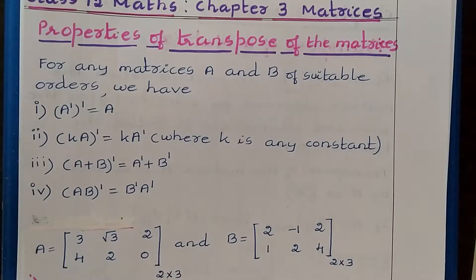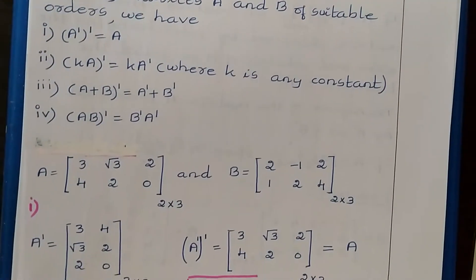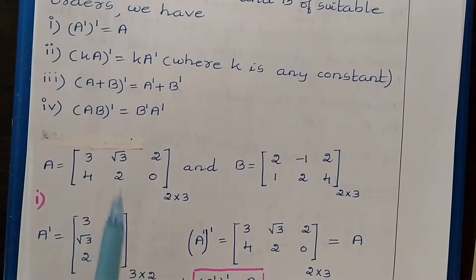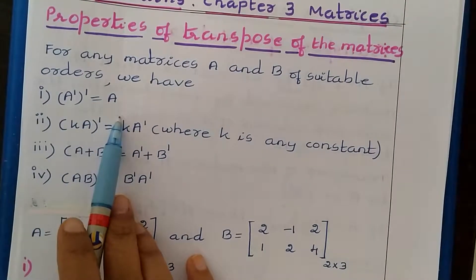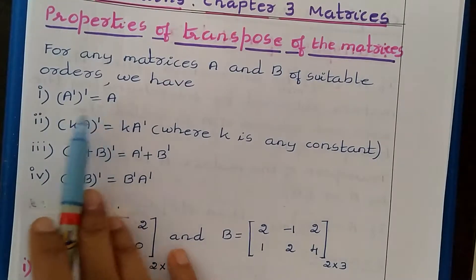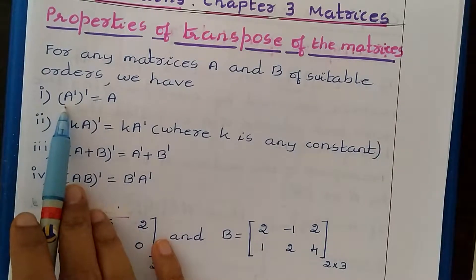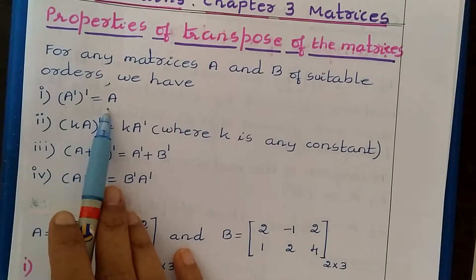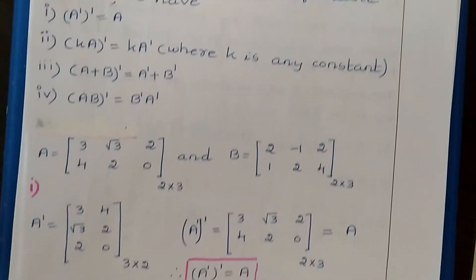Now let us verify these properties by taking some examples. I have taken A and B matrices with order 2×3. First, we will verify the first property — A transpose transpose is equal to A, meaning A double dash is equal to A. If we find the transpose of A transpose, we should get the original matrix back.